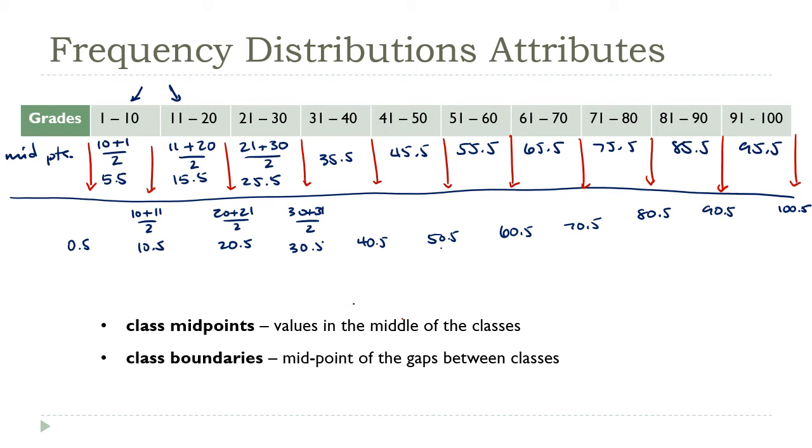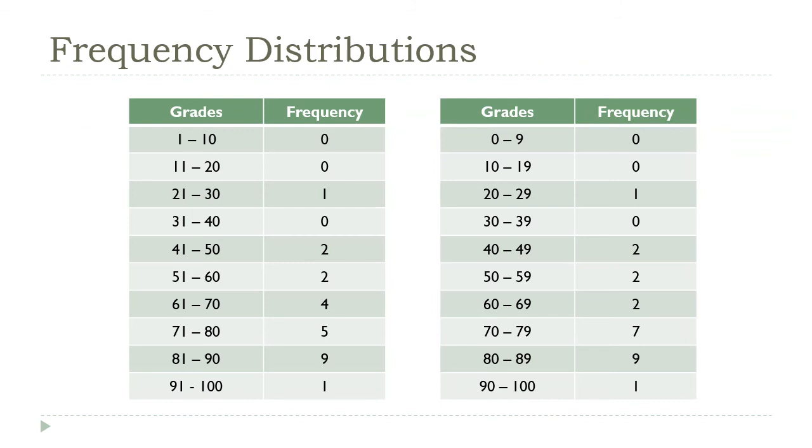So this takes care of all of our definitions. So I do want to look at one more thing here. Notice the class sizes in the second table. There are exceptions to our rule that the class size should always be consistent.